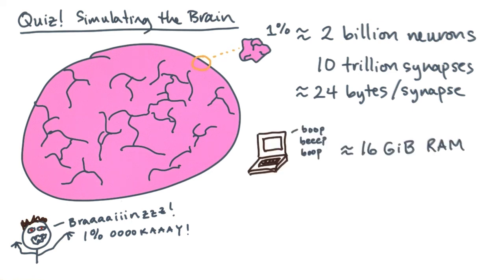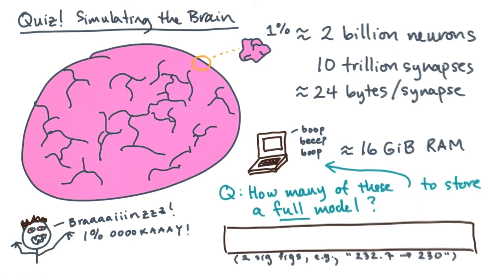Now, suppose I gave you a computer workstation with 16 GB of main memory. Here's my question to you. How many of these 16 GB machines would you need to store a full model that is all 100% of the brain?